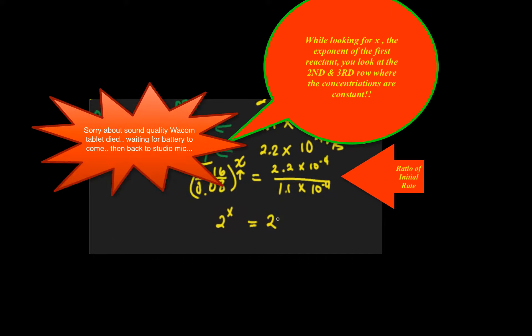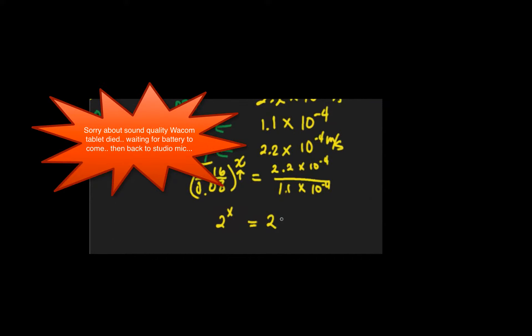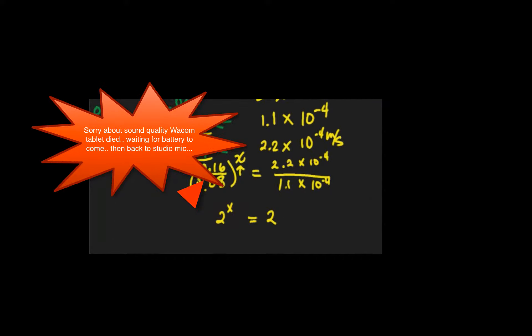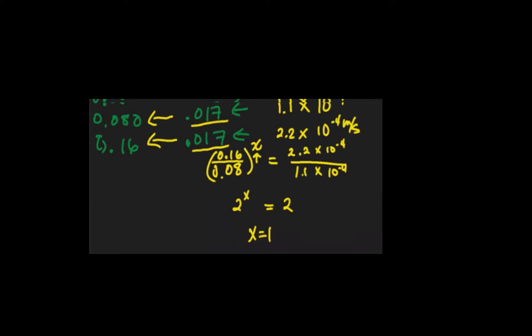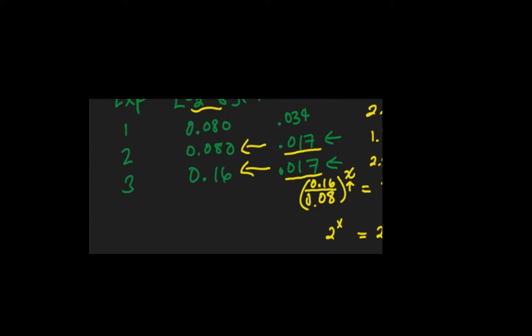Initial rates, okay, so this goes in there twice and this also happens to go in there twice. So what is the exponent? Two to the x equals one. So we found one of them now.